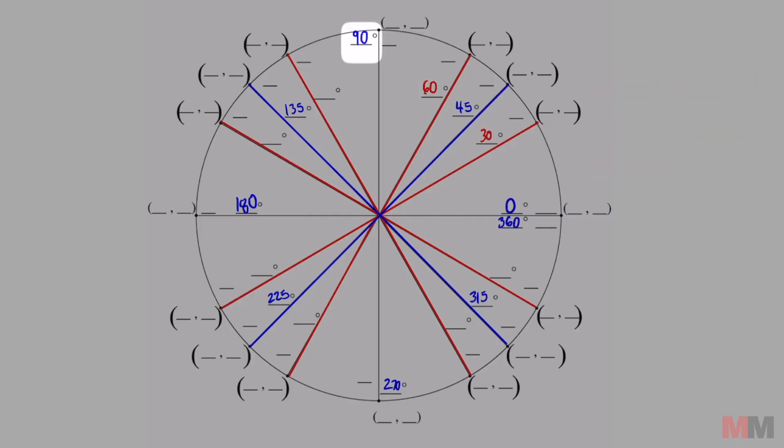90 is already labeled. So we're doing the same thing except now we're focusing on red. 120. 150. 180 is already labeled.